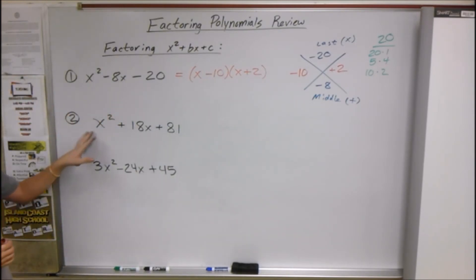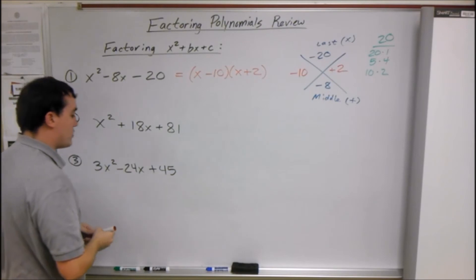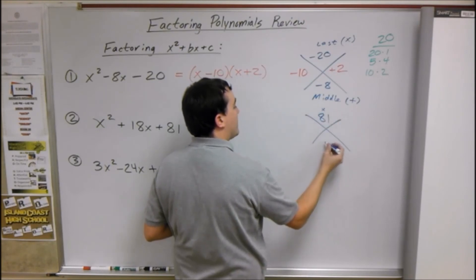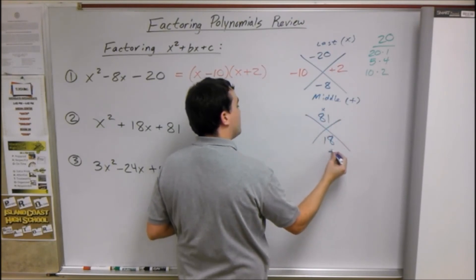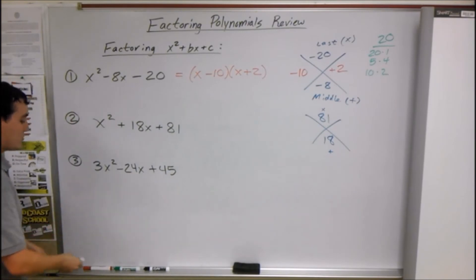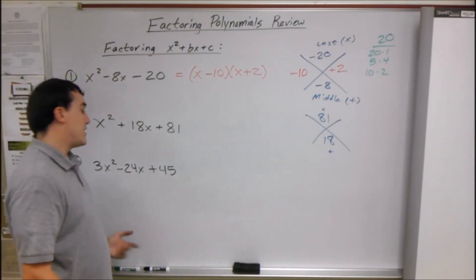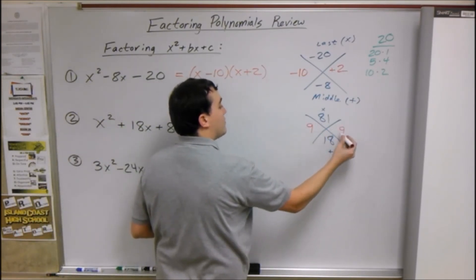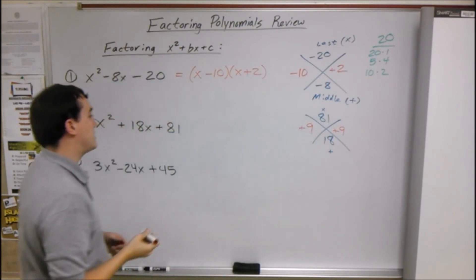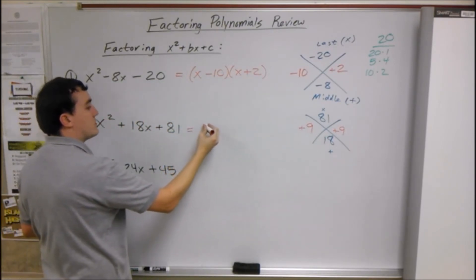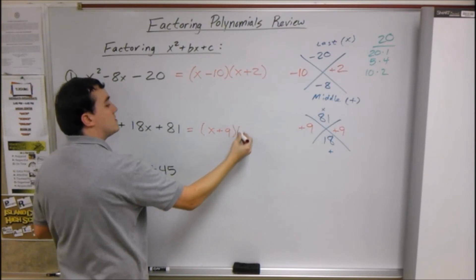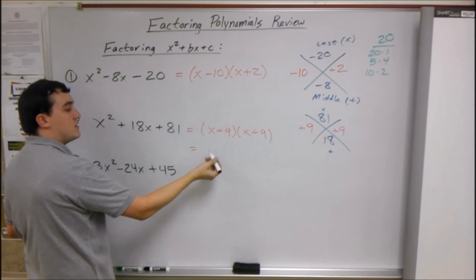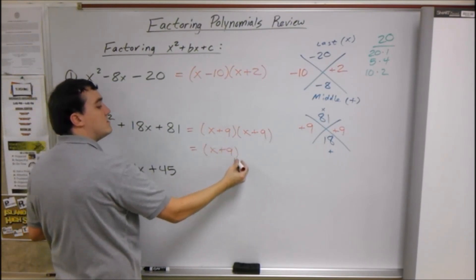For number 2: we need two things that multiply to equal 81 and add up to 18. The only things that multiply to equal 81 are 9 and 9, and those happen to be our answer — 9 × 9 = 81, and 9 + 9 = 18. So this factors into (x + 9)(x + 9). And if you ever have something times itself, you can simplify it as (x + 9)².